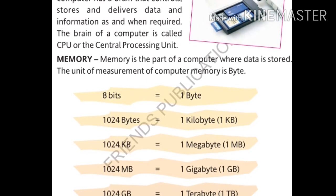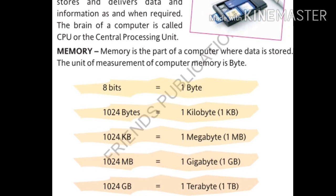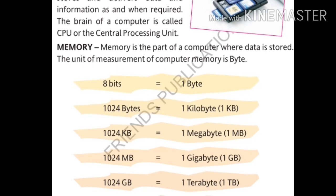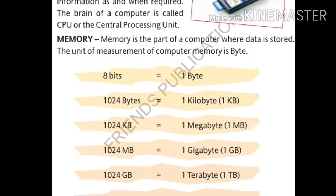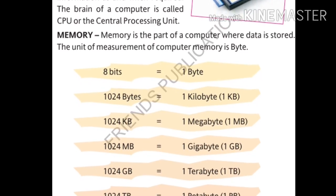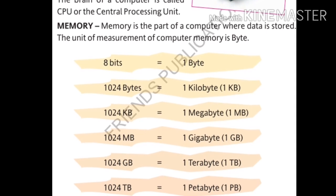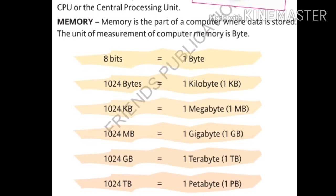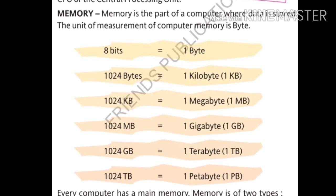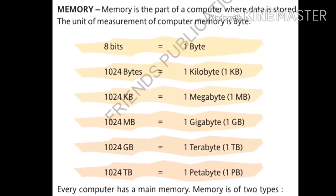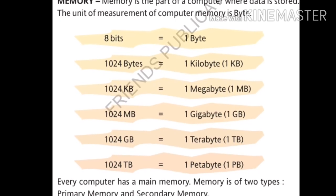Now, what is memory? Memory is that part of the computer where data is stored. The unit of measurement of computer memory is byte. Looking at the table: 8 bits equals 1 byte; 1024 bytes equals 1 kilobyte (KB); 1024 KB equals 1 megabyte (MB); 1024 MB equals 1 gigabyte (GB); 1024 GB equals 1 terabyte (TB); and 1024 terabytes equals 1 petabyte.